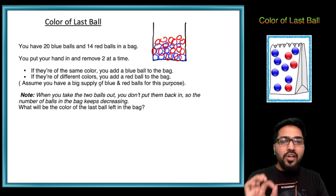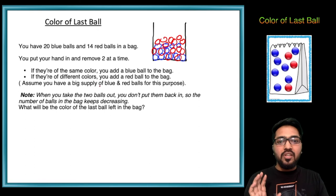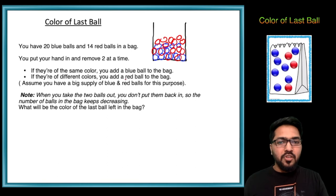So each time basically we're removing one ball at a time. At the end when one ball is left, we have to tell what its color will be - will it be blue, will it be red, or if it cannot be determined then simply say not possible.